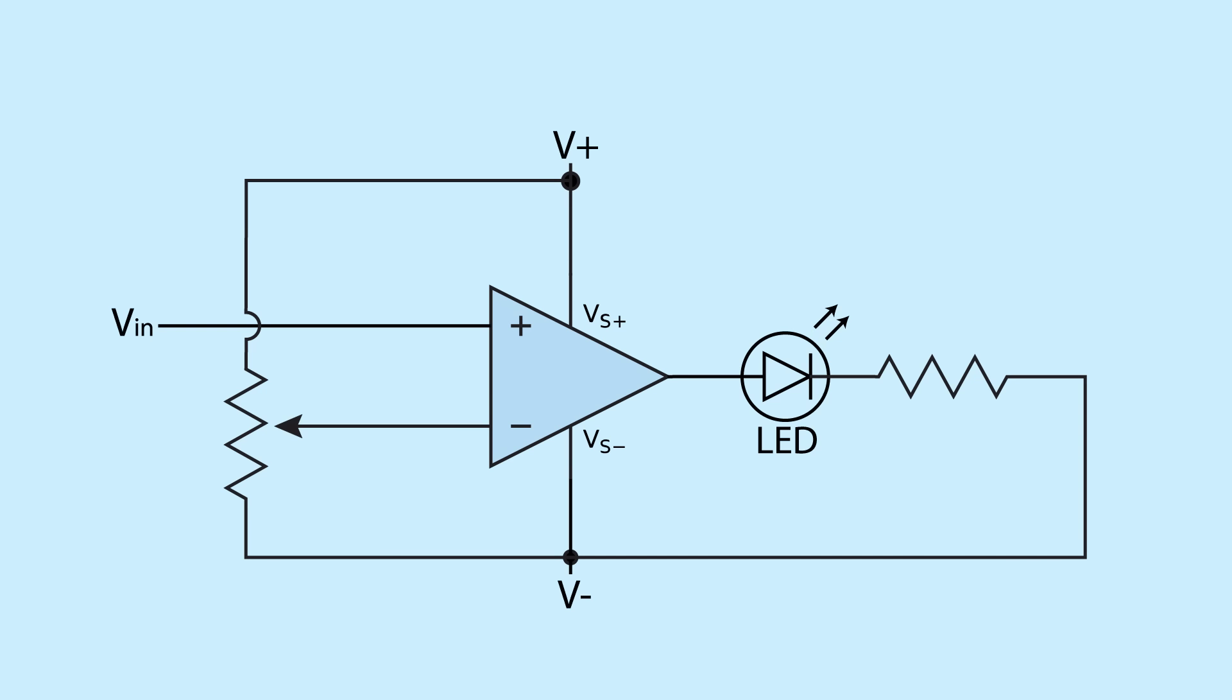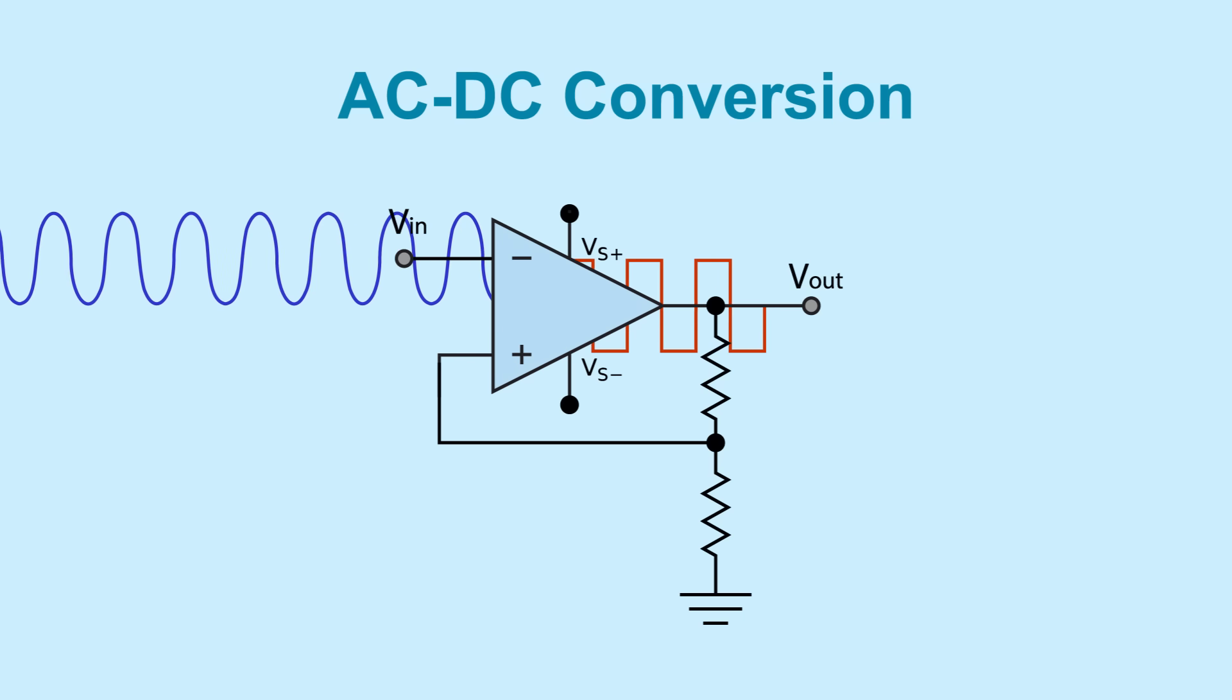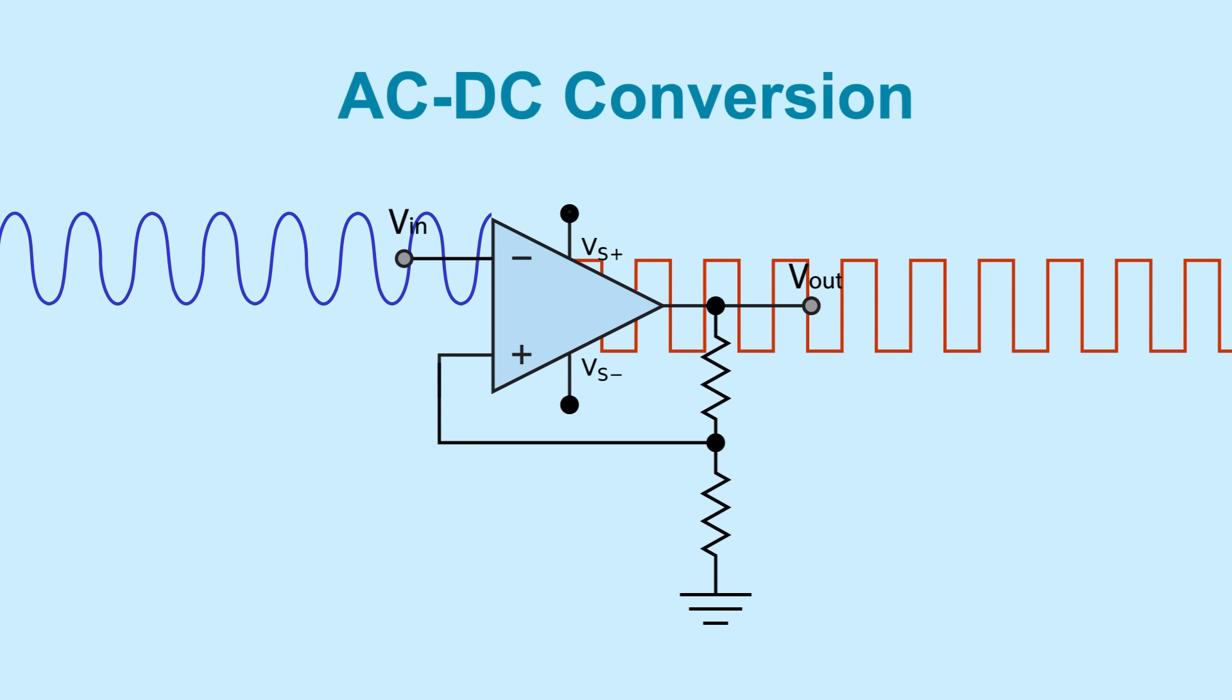In this configuration, the op amp works great as a comparator, comparing the two input voltages and effectively switching the output between high and low. As a comparator, an op amp could be used to make an AC to DC converter, turning an AC sine wave into a DC square wave. With one input connecting to AC, as the wave flows, the output would switch back and forth between saturating positive and negative, converting AC to DC.